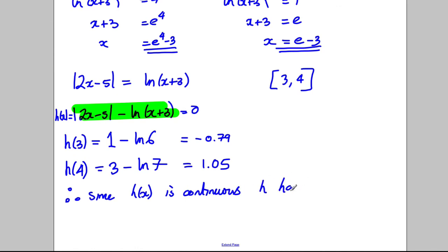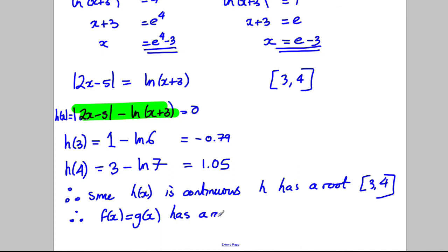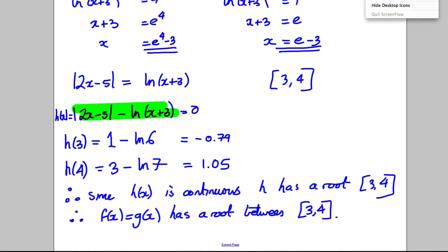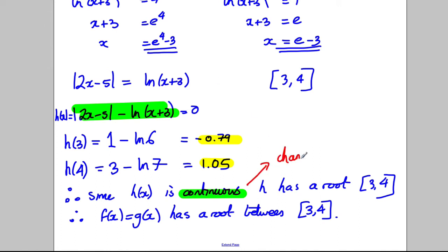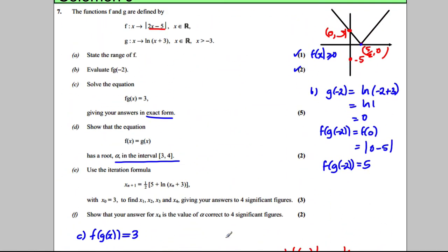Since H(x) is continuous and H(3) ≈ −0.79 and H(4) ≈ 1.05, there is a change of sign, so H has a root between 3 and 4, and therefore F(x) = G(x) has a root between 3 and 4. Important: you must state 'continuous', state the change of sign, then state therefore H has a root.